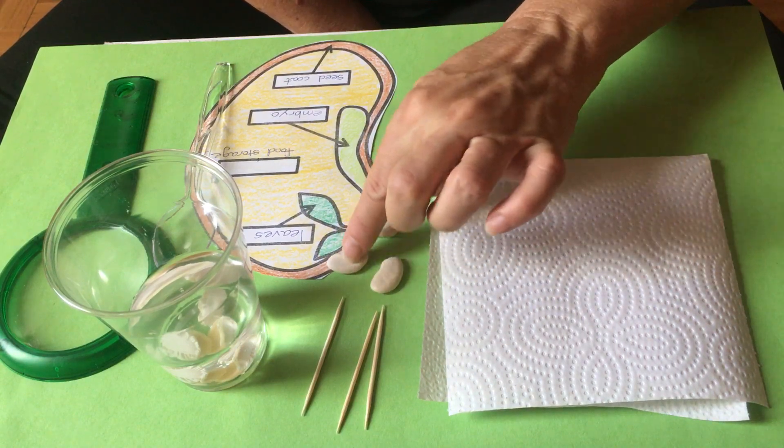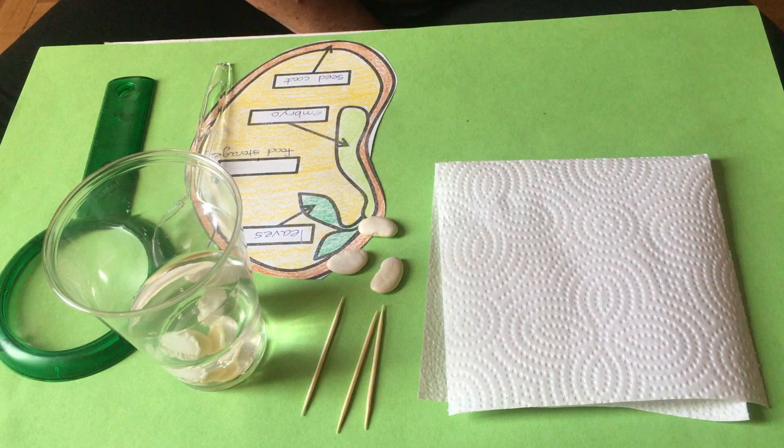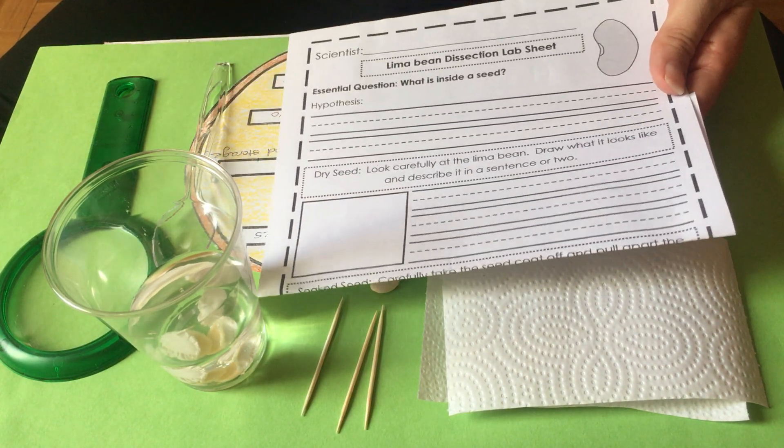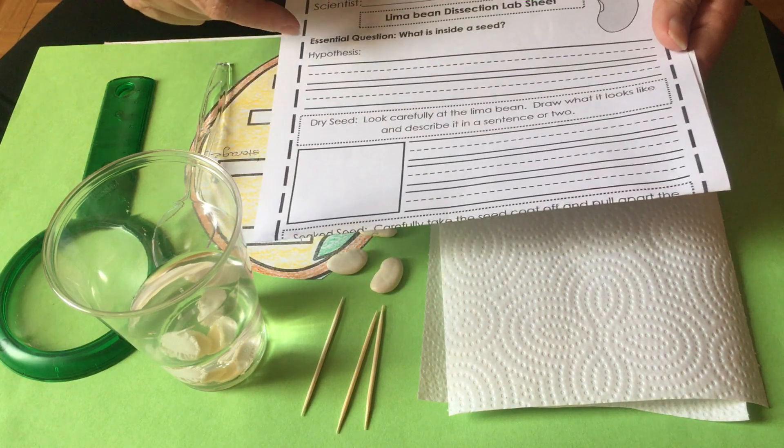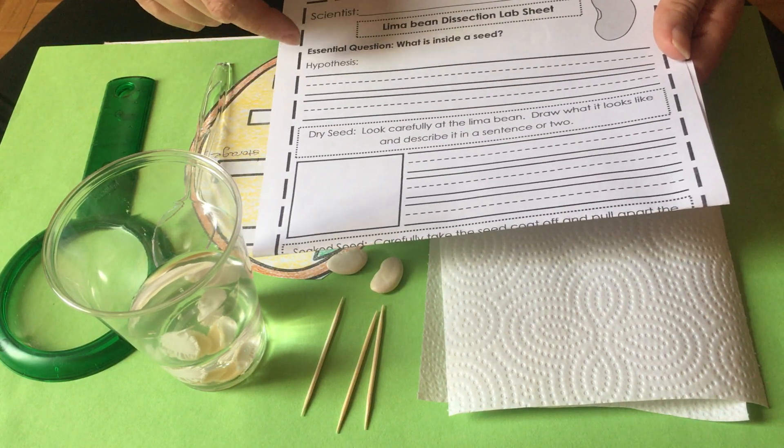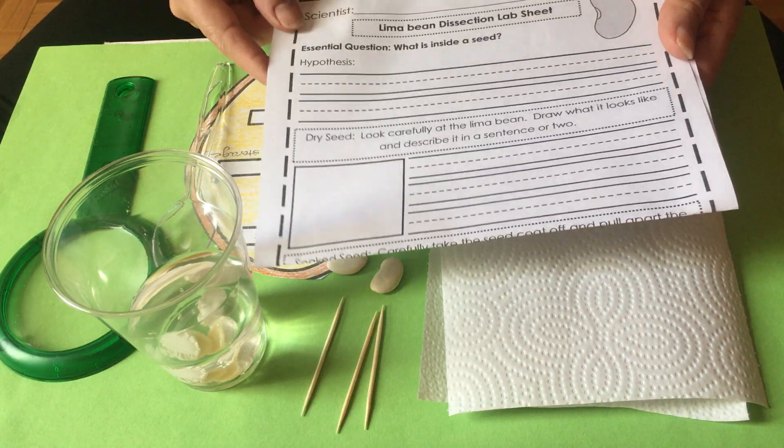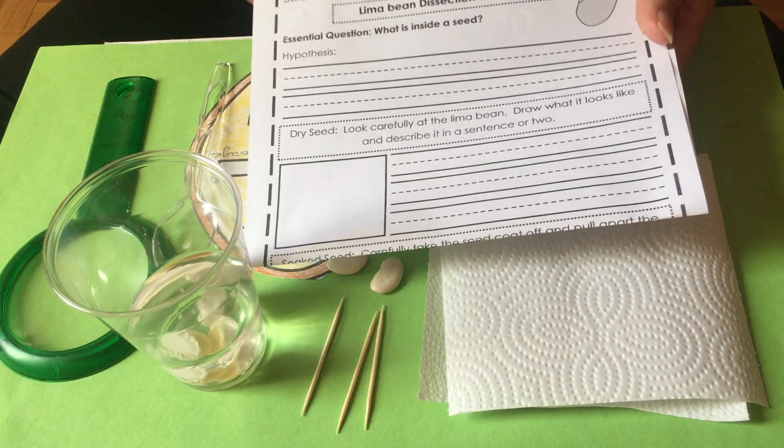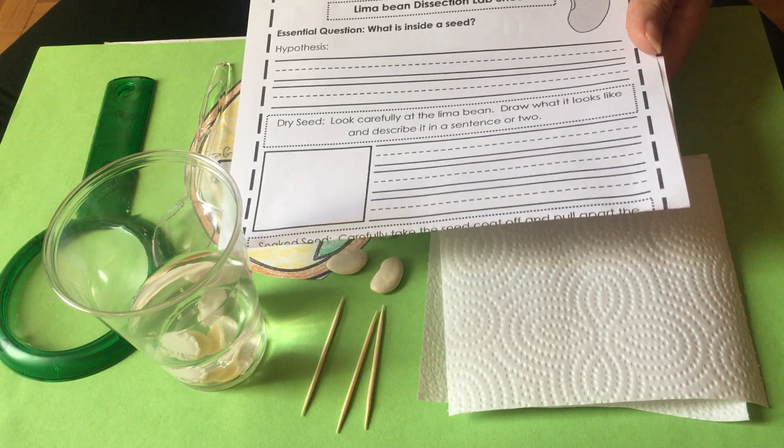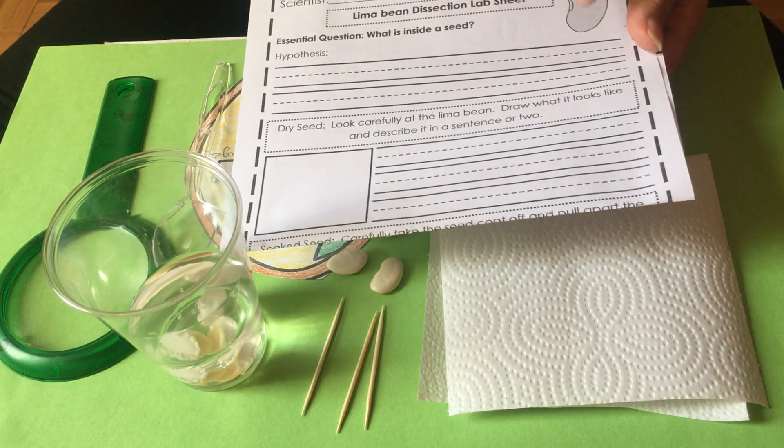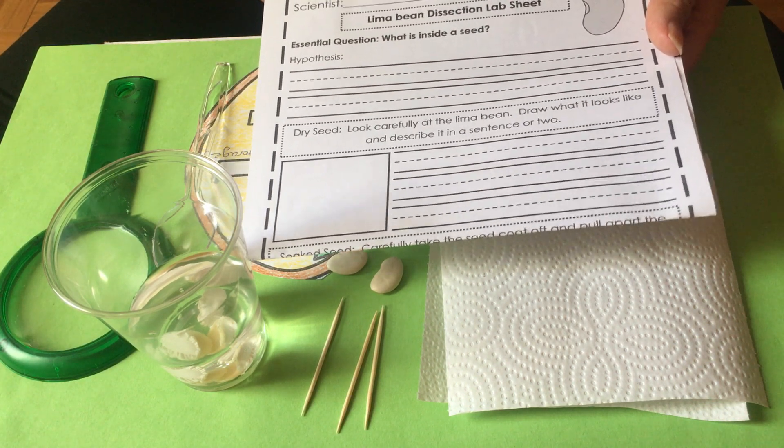You have a lab sheet that you're going to be working on, and there are three parts to it. The first part is 'what is inside a seed' - you're going to give me a sentence to tell me what you think is inside a seed. Before we start the experiment, we should fill this out. Give a guess about what you think is inside a seed.